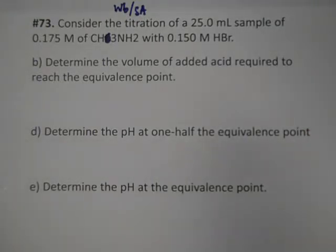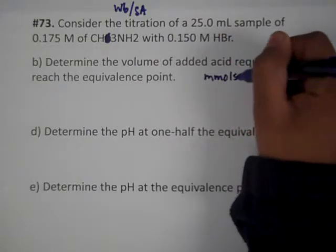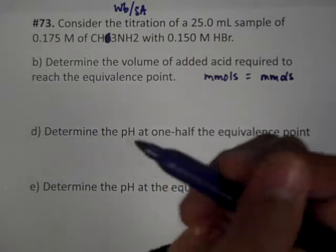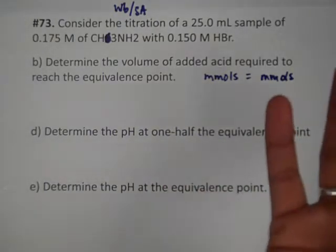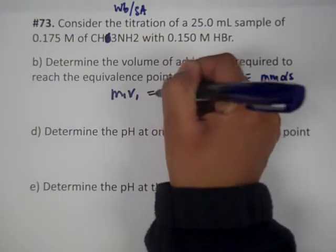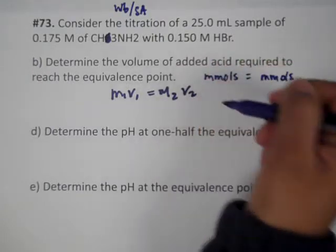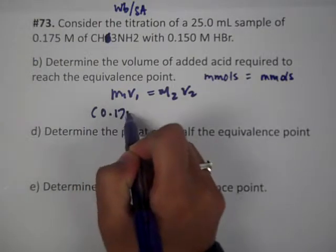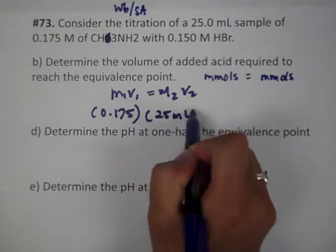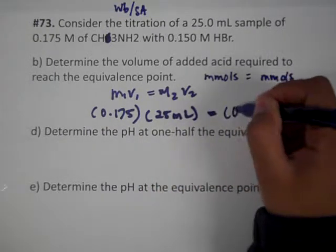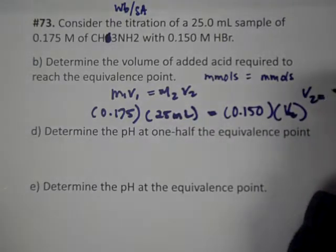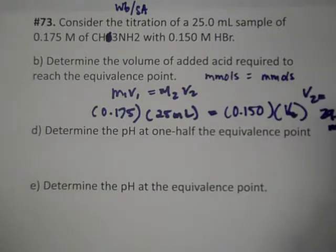We're going to determine the volume of acid required to reach the equivalence point. As always with equivalence points, millimoles of acid equals millimoles of base, so we use M1V1 = M2V2 to find V2. It's just a simple plug and chug — you can leave it in milliliters — and we get V2 equal to 29.2 milliliters.